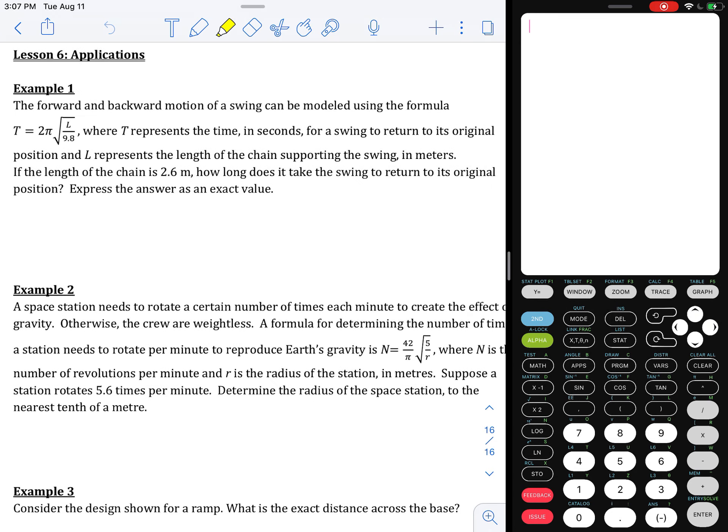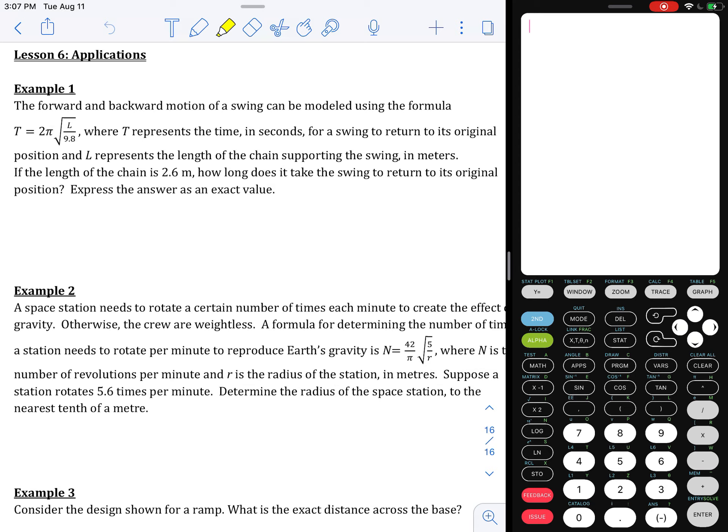Lesson 6 is on applications. Example 1 tells us the forward and backward motion of a swing can be modeled using the formula T equals 2π times the square root of L divided by 9.8, where T represents the time in seconds for the swing to return to its original position, and L represents the length of the chain supporting the swing in meters.